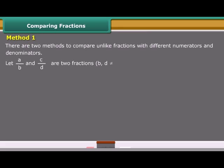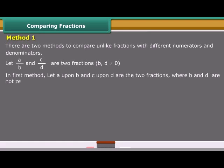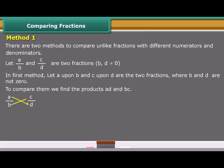Method 1: There are two methods to compare unlike fractions with different numerators and denominators. Let A/B and C/D be two fractions where B and D are not equal to 0. In the first method, to compare them, we find the products A×D and B×C.